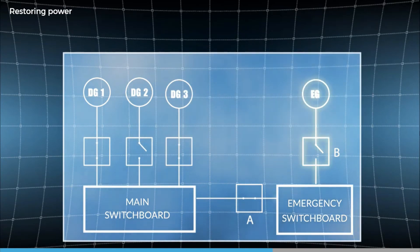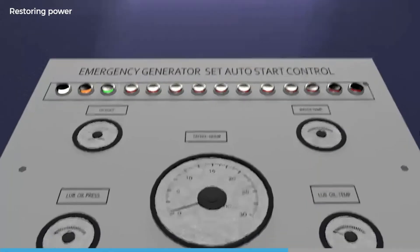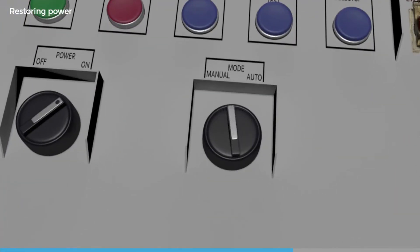There have been many occasions after a blackout where the emergency generator has been left running. Make sure all controls are set back to the auto position, ready for the next time.